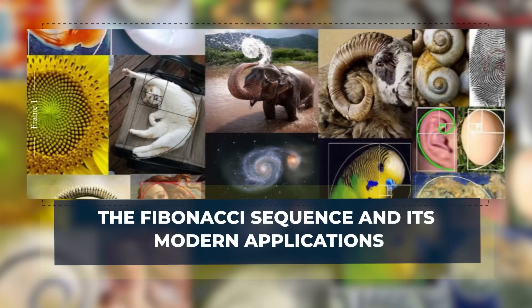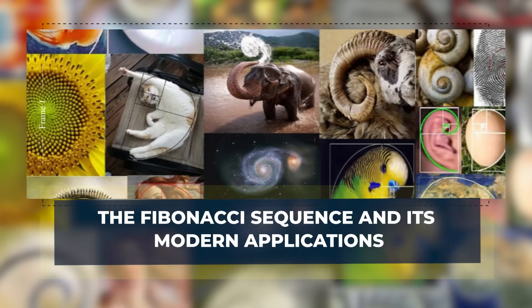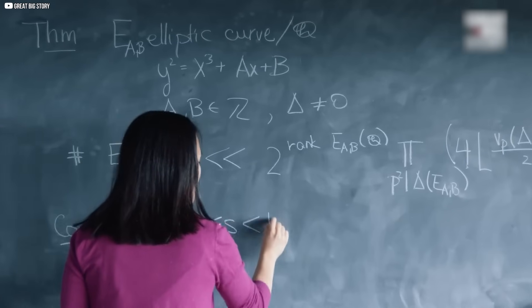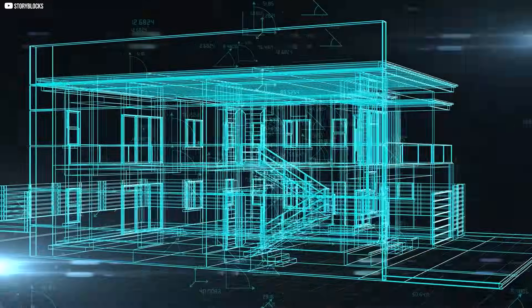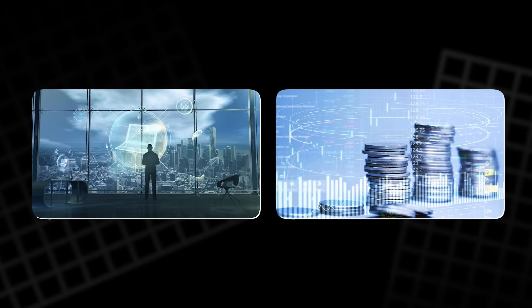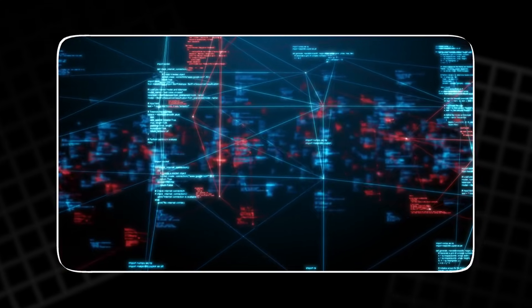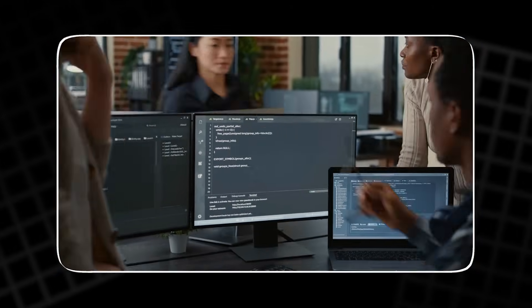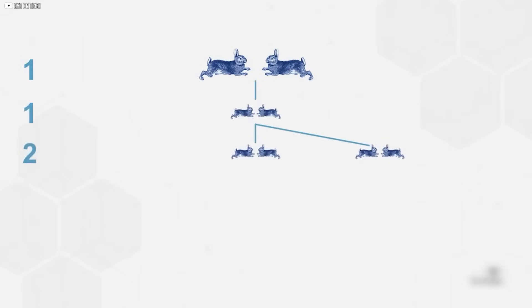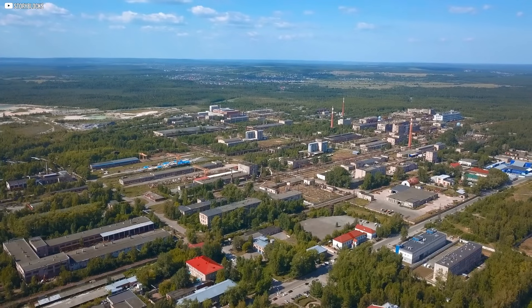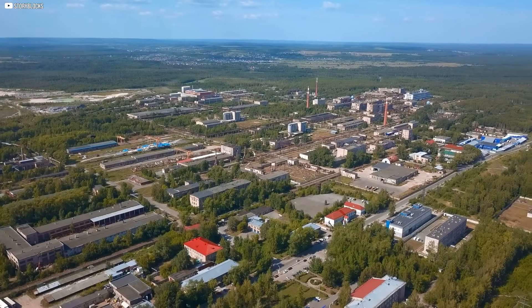In today's world, the Fibonacci sequence has transcended its historical role in nature and art, finding relevance in a range of modern fields, including technology, finance, and computer science. The sequence is commonly used in algorithms, financial market predictions, and even encryption methods. The beauty of the Fibonacci sequence lies in its simplicity, yet its implications are vast, allowing it to be applied in an array of ways across various industries.